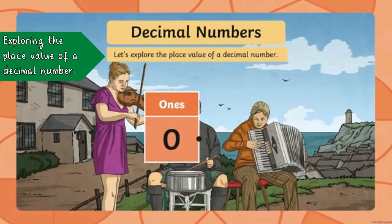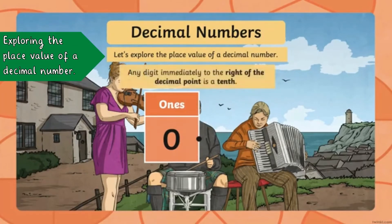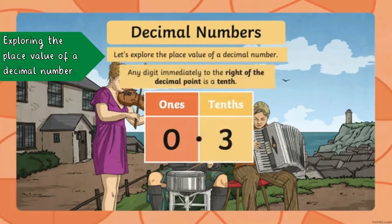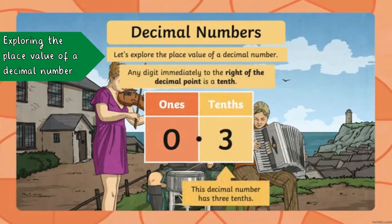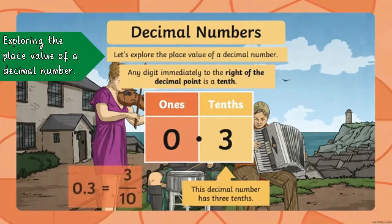Any digit immediately to the right of the decimal point is a tenth. So you can see there we've got 0.3, and the 3 is the tenth. As a fraction, this would be 3 tenths.